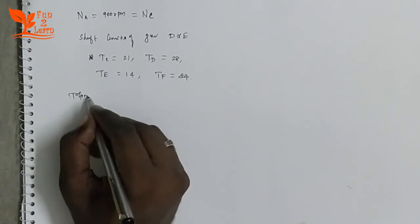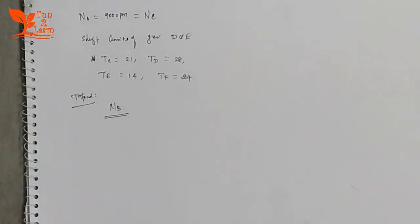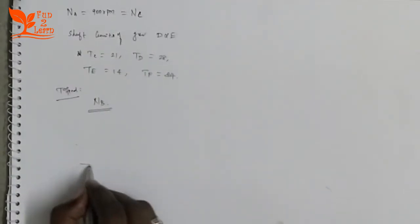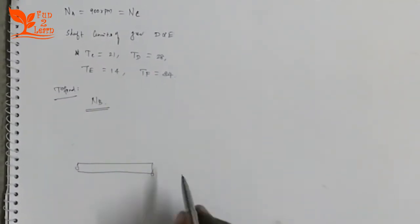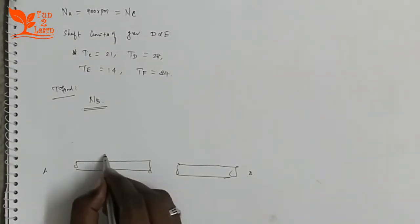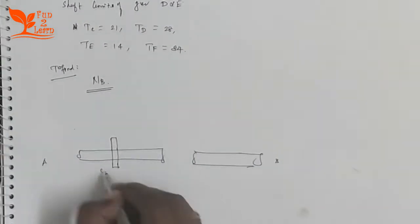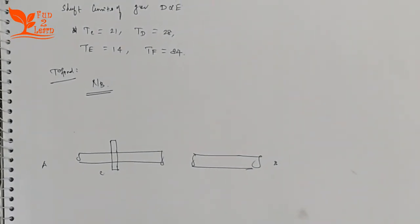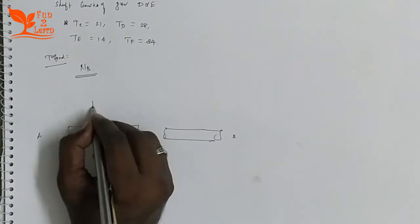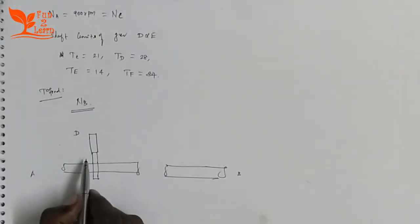To solve this, note that shafts A and B are collinear, meaning they are in one straight line. Gear C is on shaft A. Gear D meshes with gear C. D and E are compound gears on one shaft, carried by arm M.